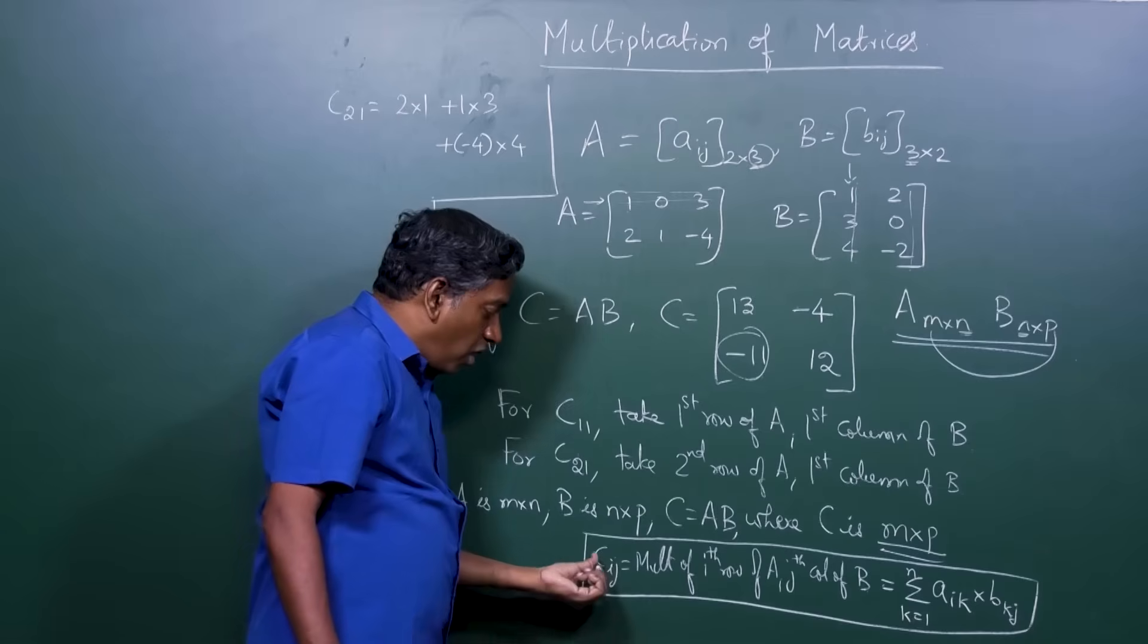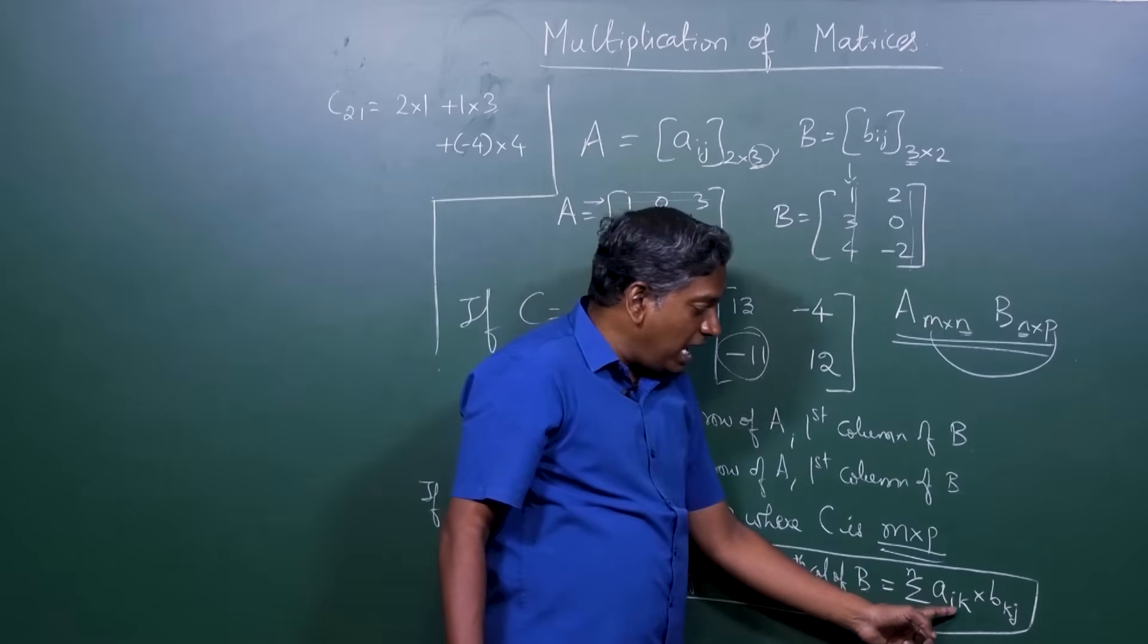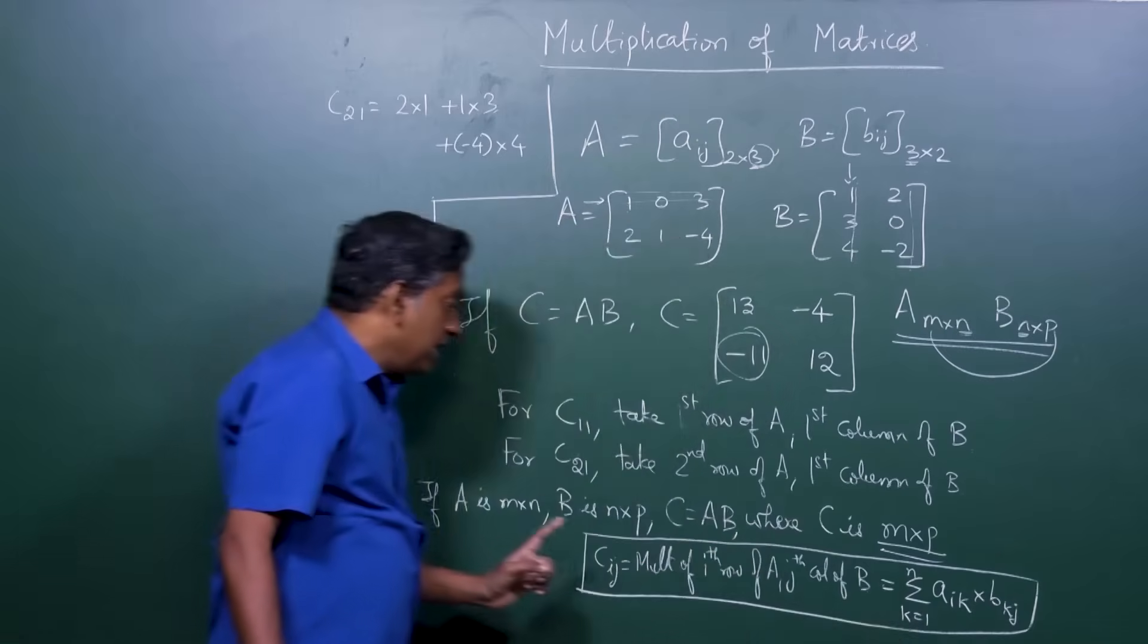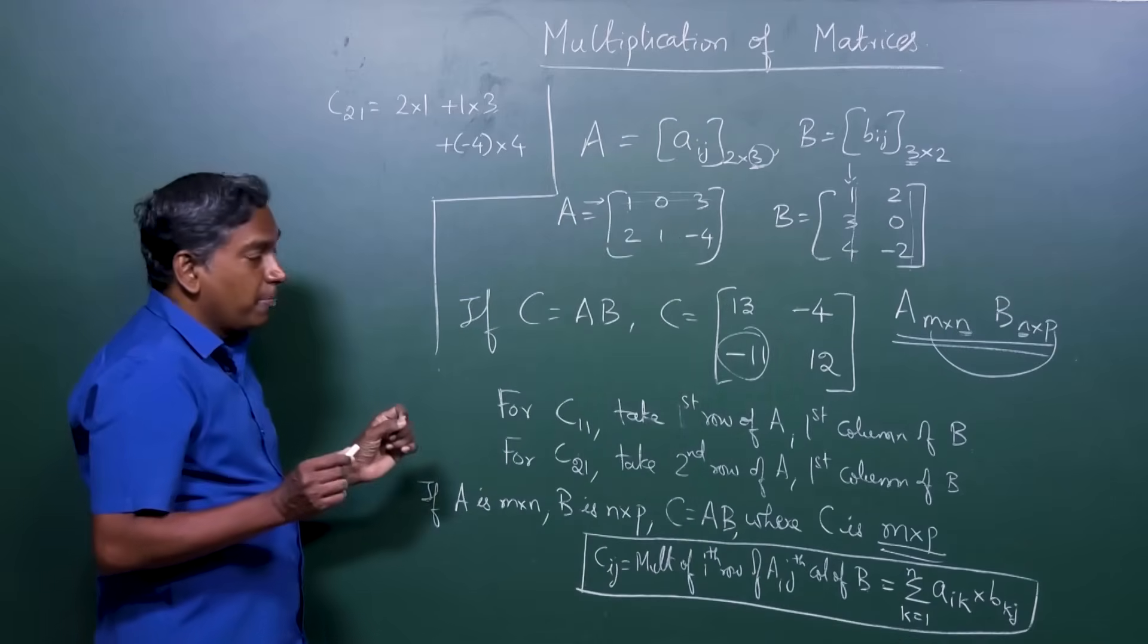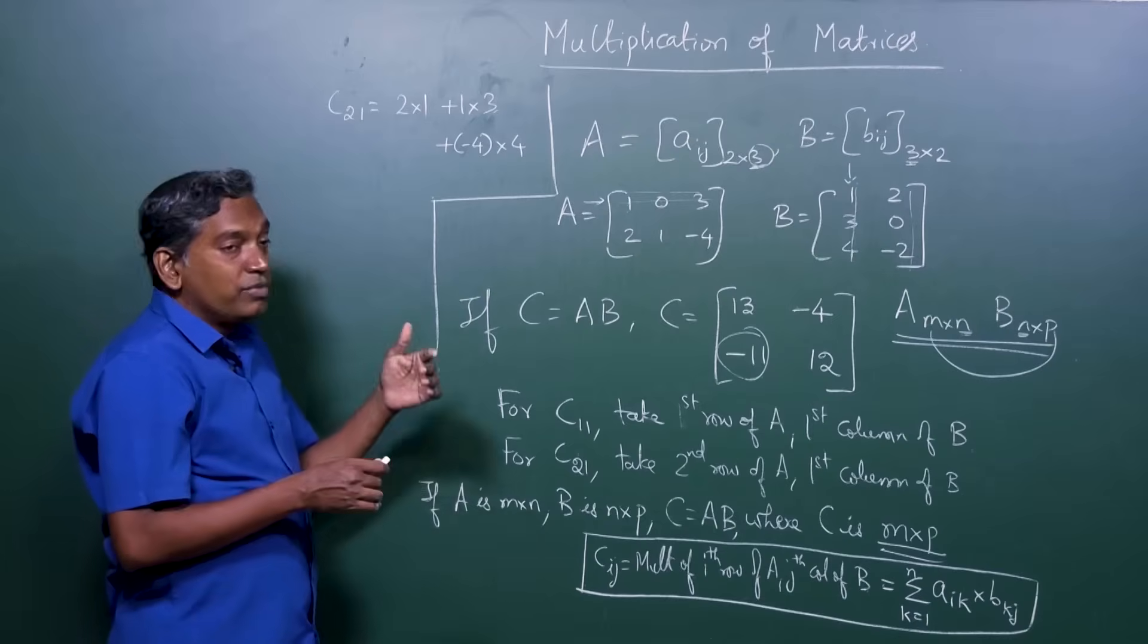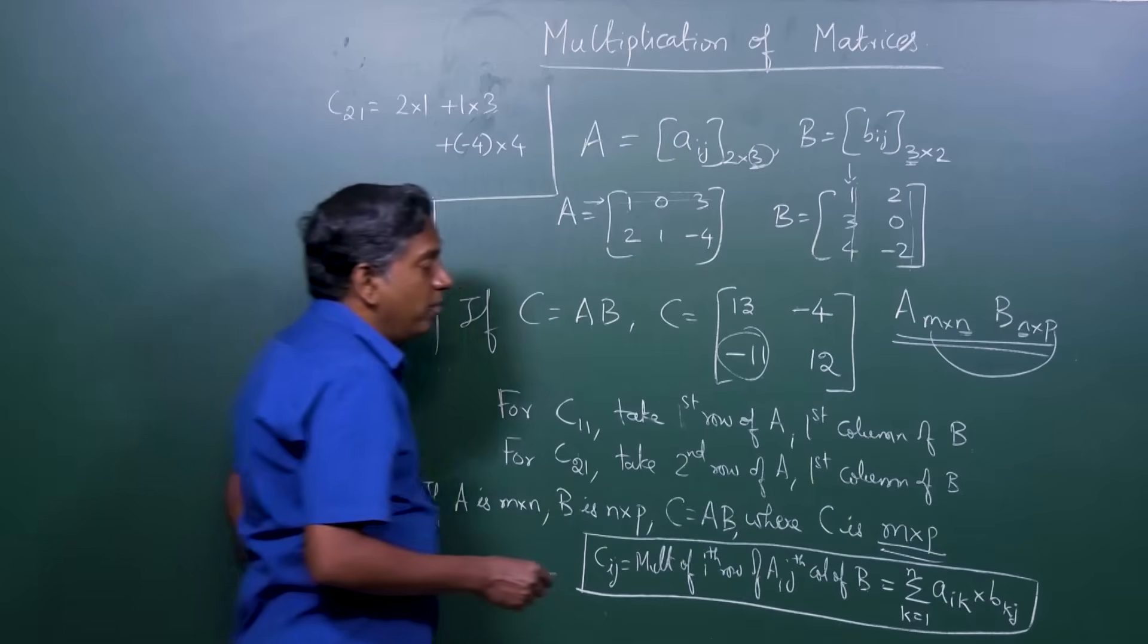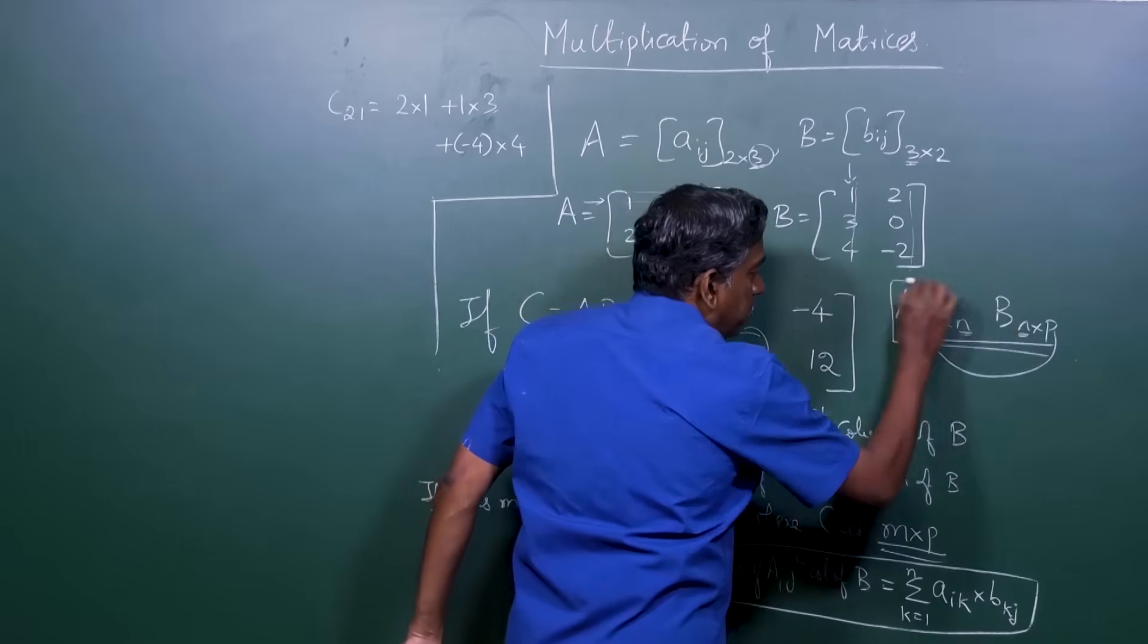So in general, the i-j-th entry of Cij of the matrix C is obtained by Aik times Bkj and then summing it over all this k is equal to 1 to n. So some big ideas in matrix multiplication is that it is not term-by-term multiplication. And the reason is that we want it to be useful for equation solving.